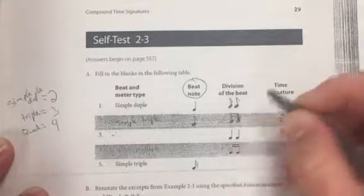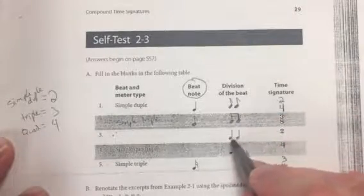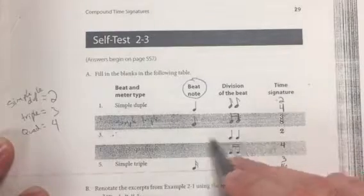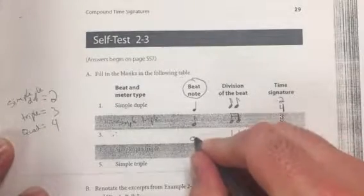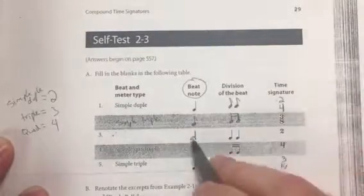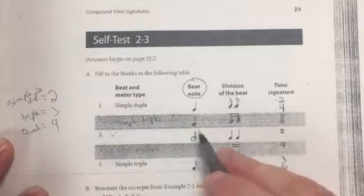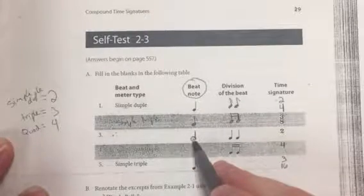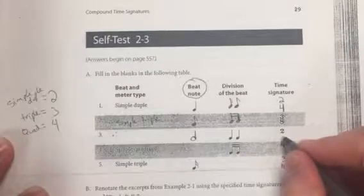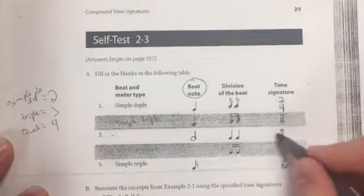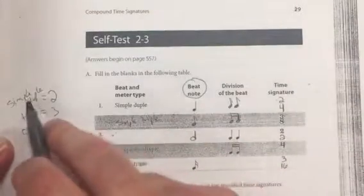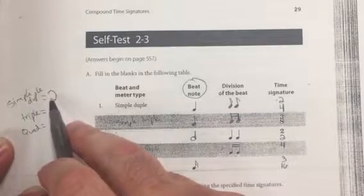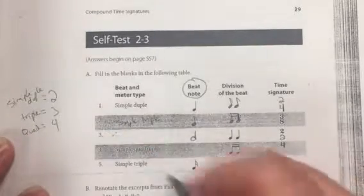Working backwards here, we have 2 quarter notes. So that's the division of the beat. That means that our beat note is a half note. From here, we can surmise our beat note as a half note. So this time signature is going to be 2/2. The top number is 2. In simple duple time, the top number of the time signature is always 2.